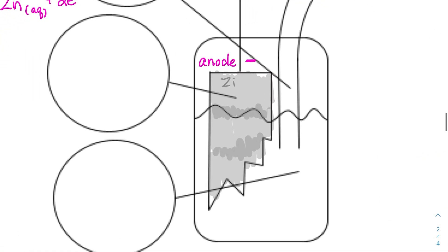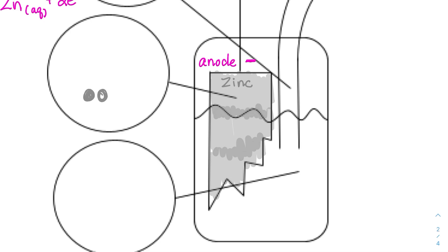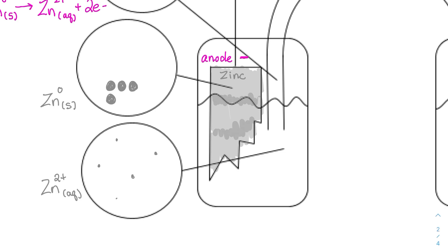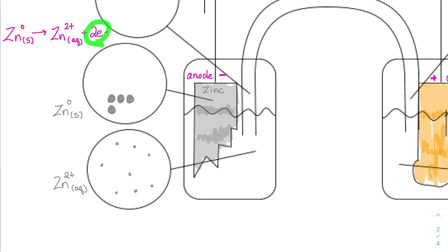At the zinc half-cell, some of the solid zinc is now in ion form. We started with six zinc solid atoms; now I'll say four remain on the electrode and two have gone into zinc ion form in solution. Zinc ions are smaller than the parent atom because they're cations. So we now have six original zinc ions in solution plus two more, giving us eight total zinc ions. The four electrons produced are going up the wire. This was a one molar zinc sulfate solution, so there are also six sulfate ions present.